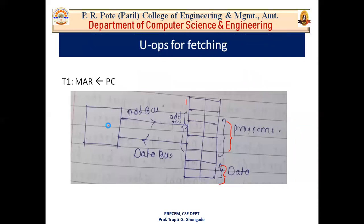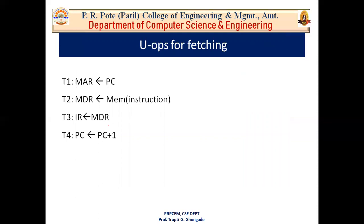Now let's see how fetching is done in detail. There are four steps — T1, T2, T3, and T4 — these are the clock cycles. In the first step (T1), the contents of the PC are loaded into the MAR: the address held by the PC is loaded into the memory address register. In the second step (T2), the instruction is fetched from memory into the MDR: the instruction comes from memory into the memory data register.